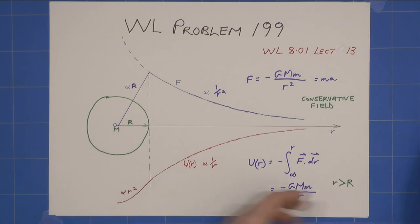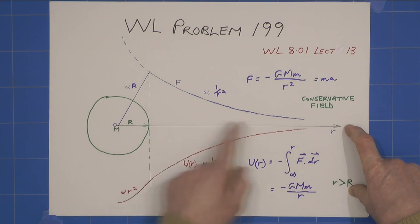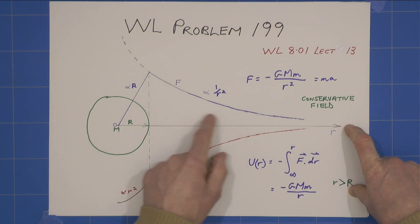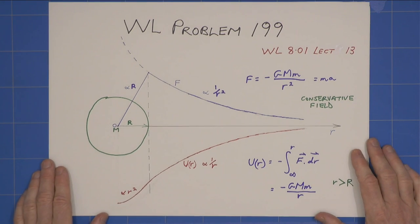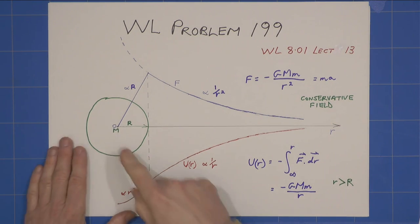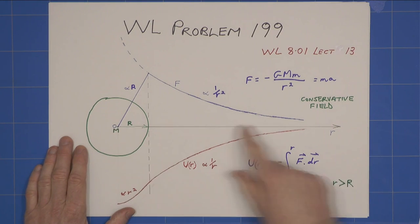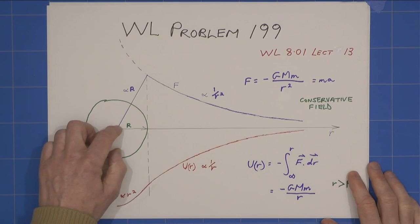We also know that gravity is a conservative field. So that where we define, where we're dealing with infinity, it doesn't matter how we get out there. Whatever path we take, the energy will always be the same difference. The potential energy will be the same difference. So to make life easy, we will consider a straight line as things move around. Infinity out there, zero is our origin.